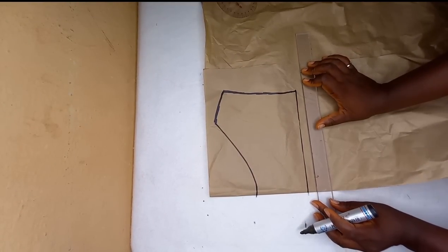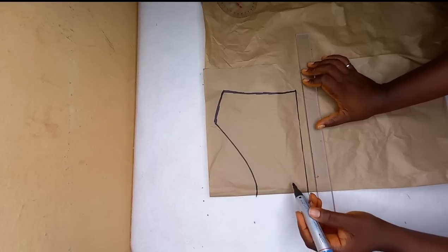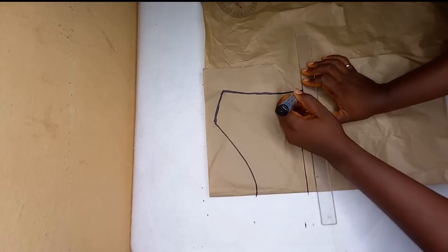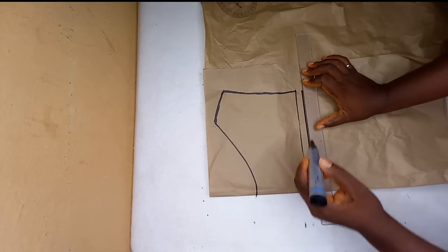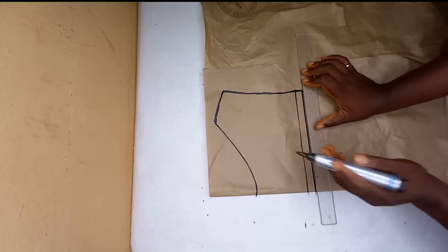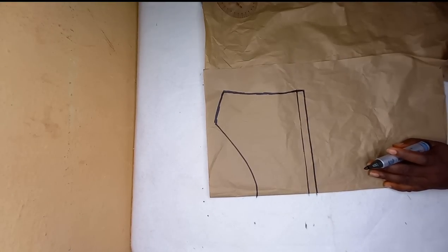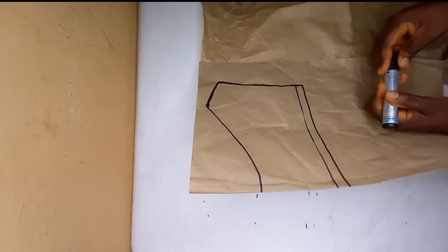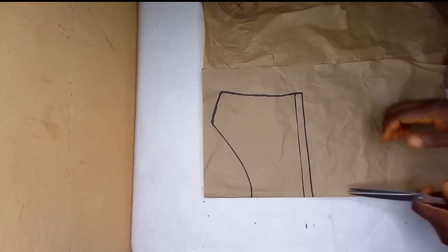After tracing out you have to go ahead and mark out half inch. This half inch will be used to join the basket design to your remaining front bodies. So that is what I just did.